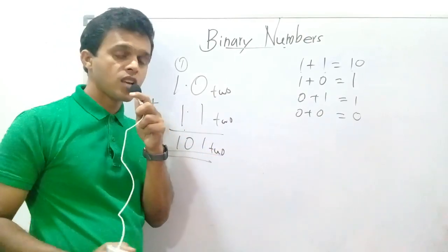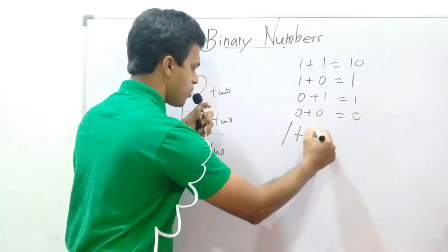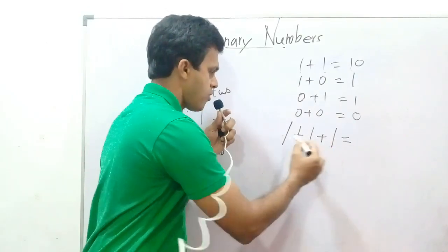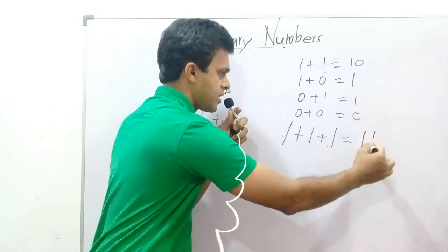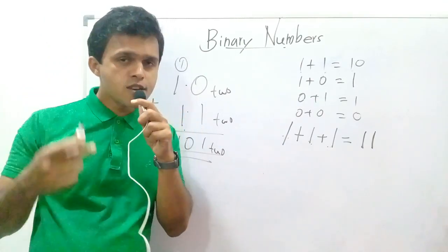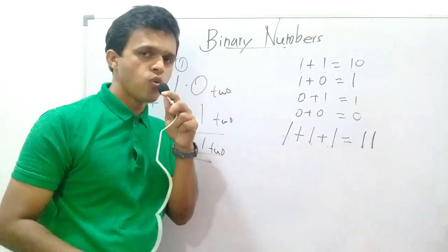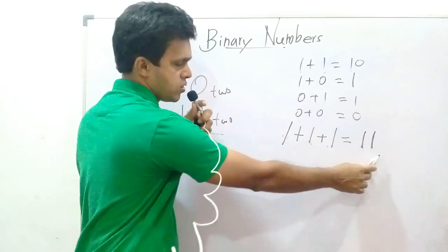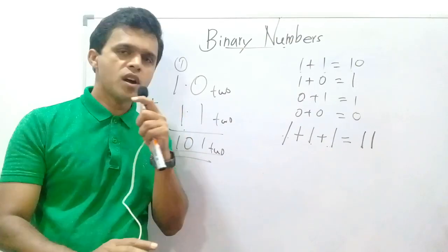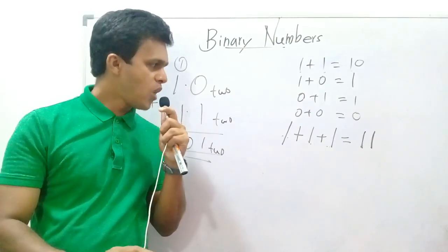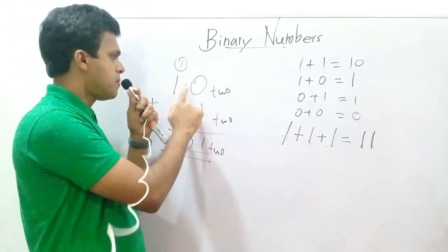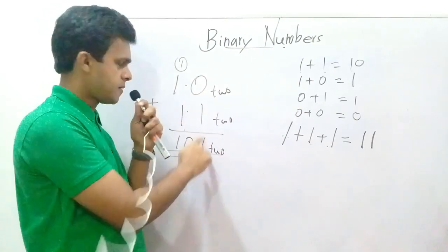Not only that — this relation also should be learnt: one plus one plus one equals eleven (11) base two. Just learn it; I will teach you the reason at the end of this lesson. One plus one plus one equals eleven (11), base two.